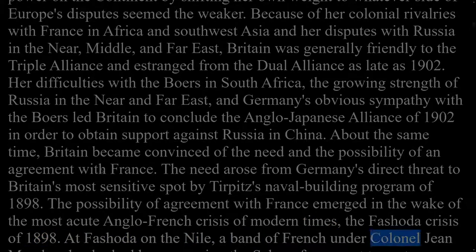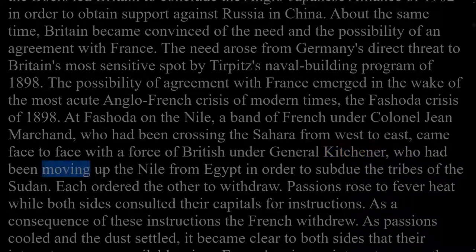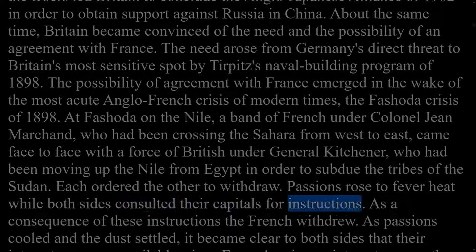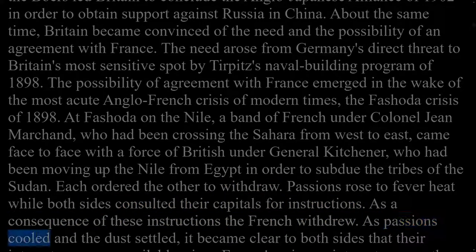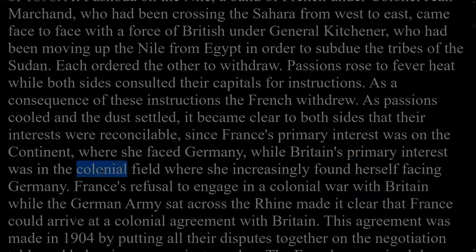The possibility of agreement with France emerged in the wake of the Fashoda crisis of 1898. At Fashoda on the Nile, a band of French under Colonel Jean Marchand, who had been crossing the Sahara from west to east, came face to face with a force of British under General Kitchener, who had been moving up the Nile from Egypt to subdue the tribes of the Sudan. Each ordered the other to withdraw; passions rose to fever heat while both sides consulted their capitals. As a consequence the French withdrew, and it became clear that their interests were reconcilable, since France's primary interest was on the continent facing Germany, while Britain's primary interest was in the colonial field where she increasingly found herself facing Germany.